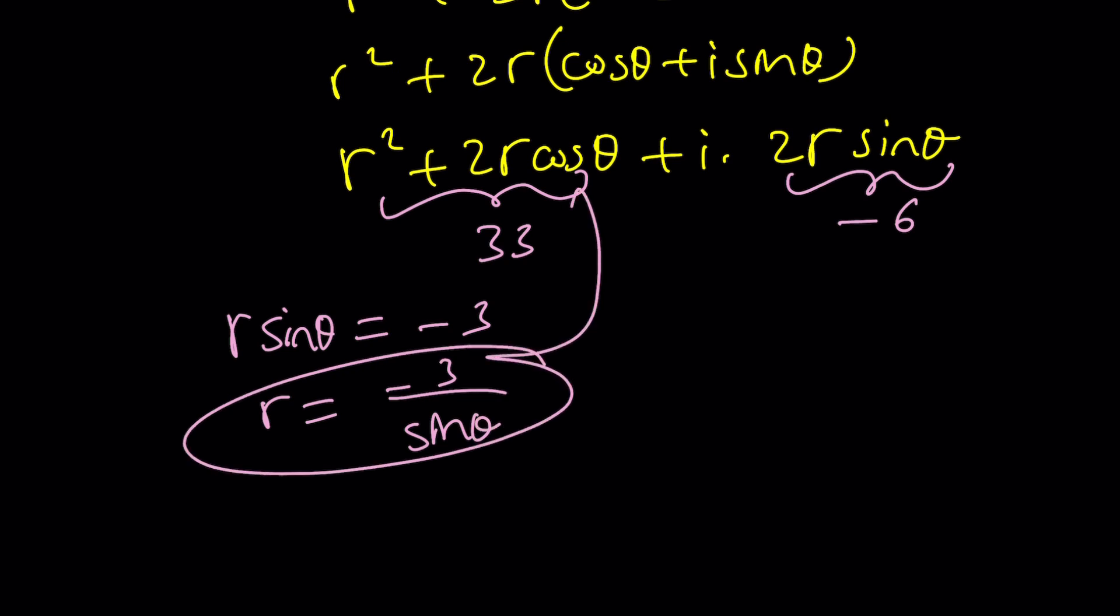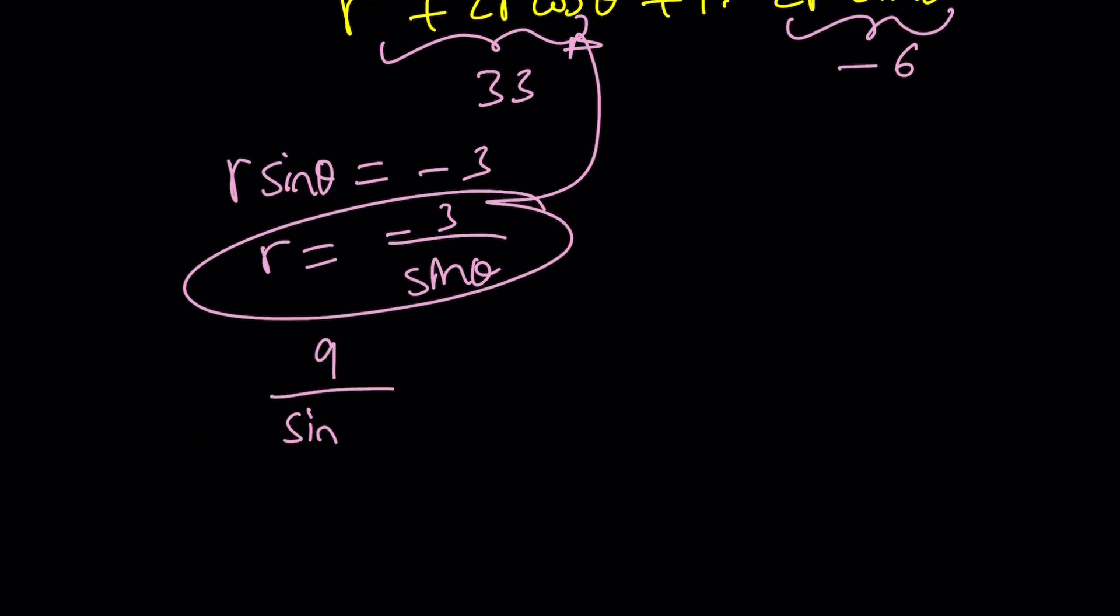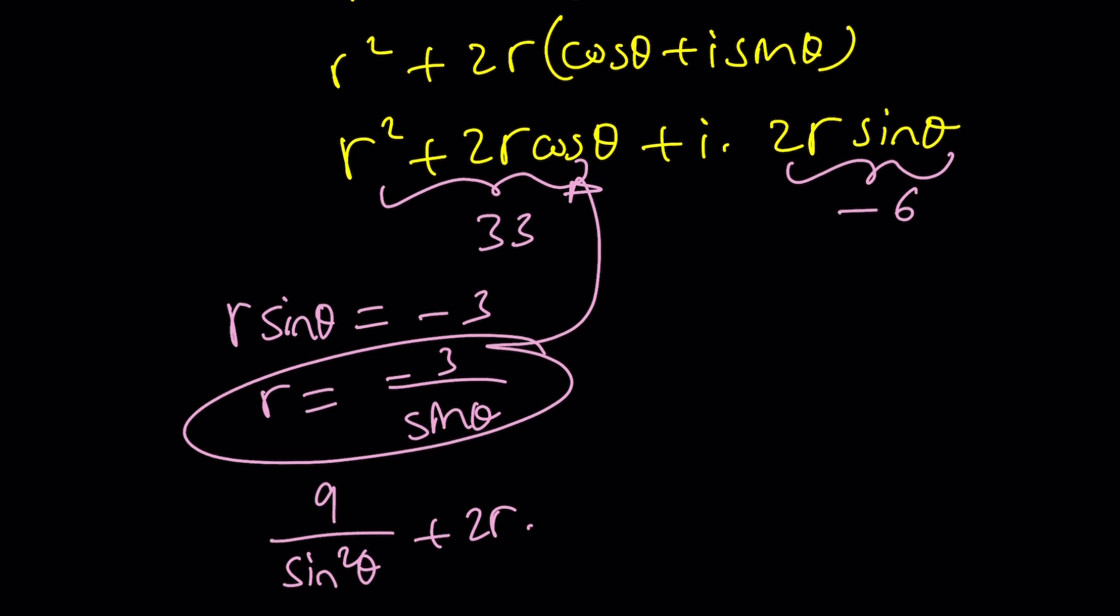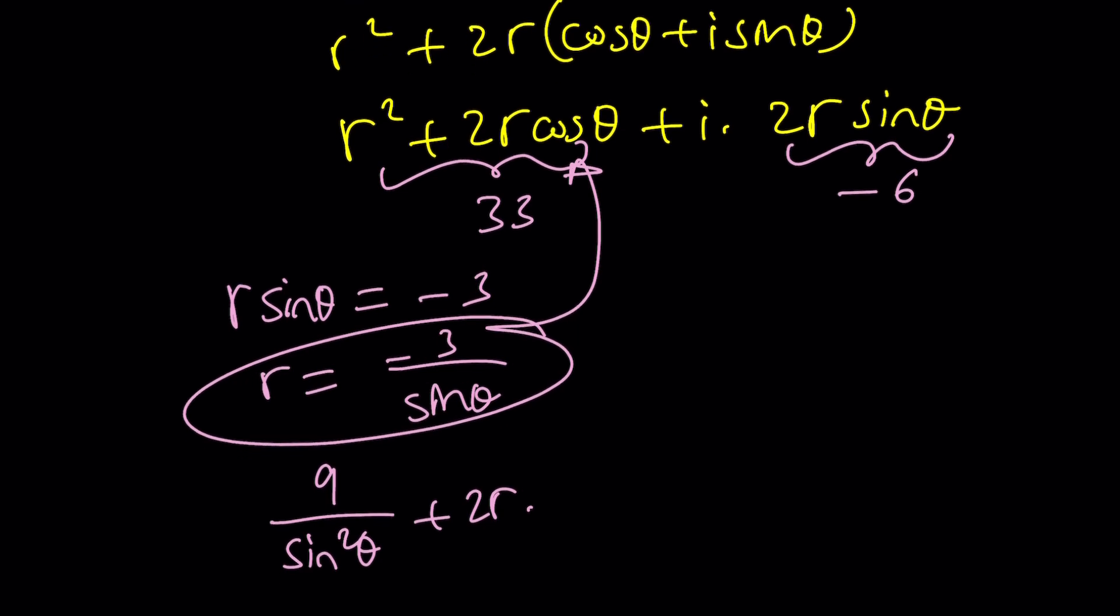So from here we can write r as negative 3 over sine θ. Plug it into this equation. r squared is going to be 9 over sine squared θ, plus 2r times cosine, which is... uh-oh, what is cosine? I don't know. But I guess we could find it.